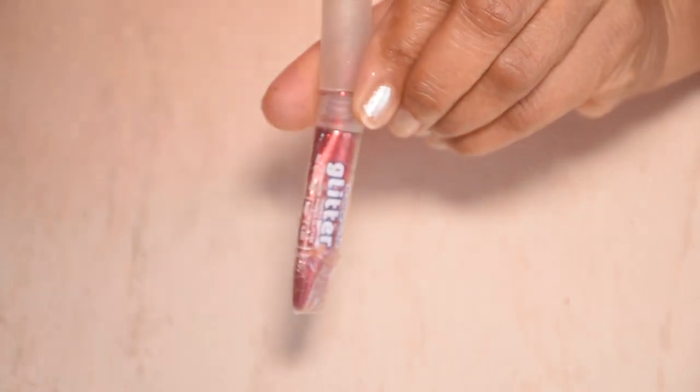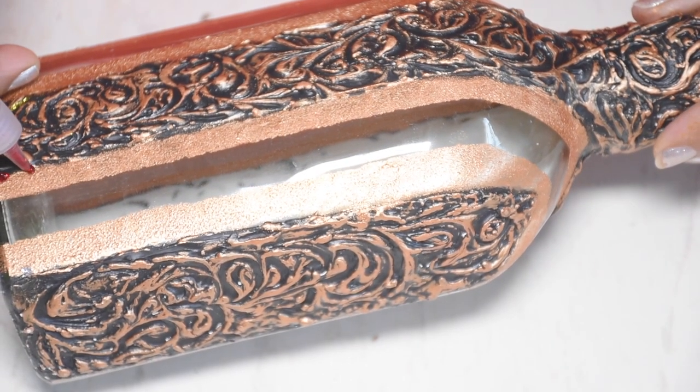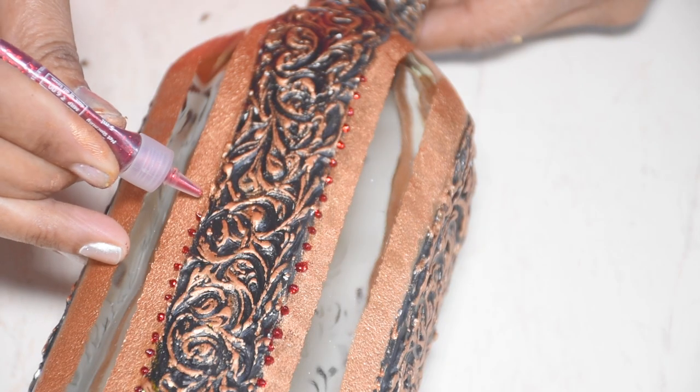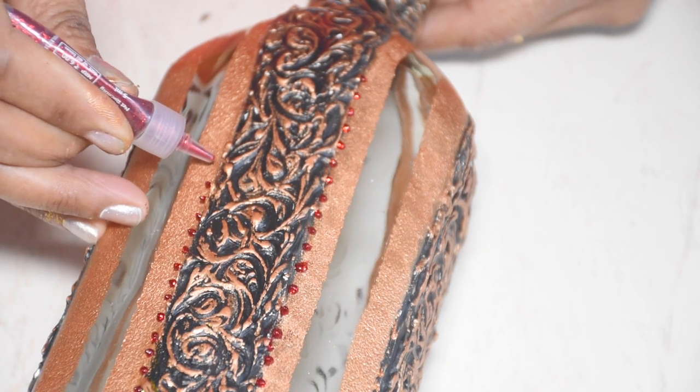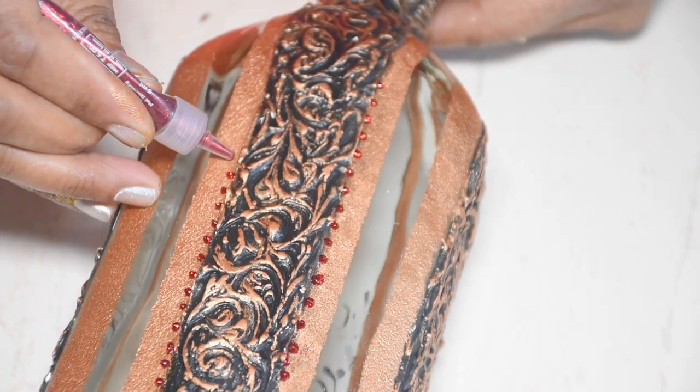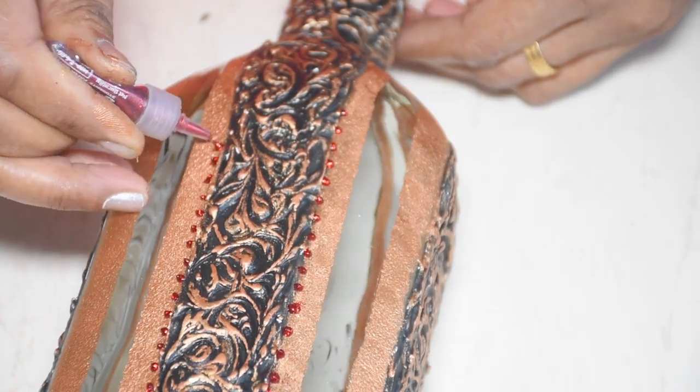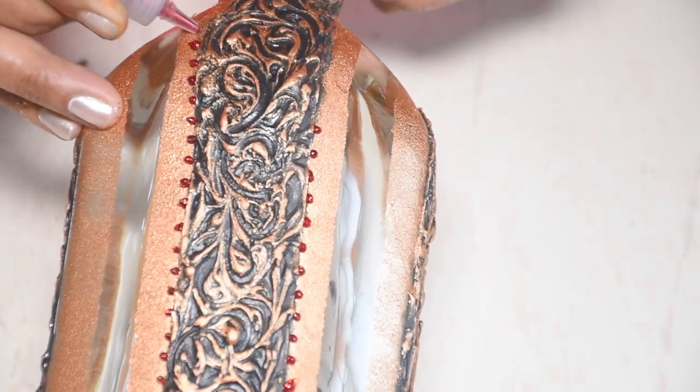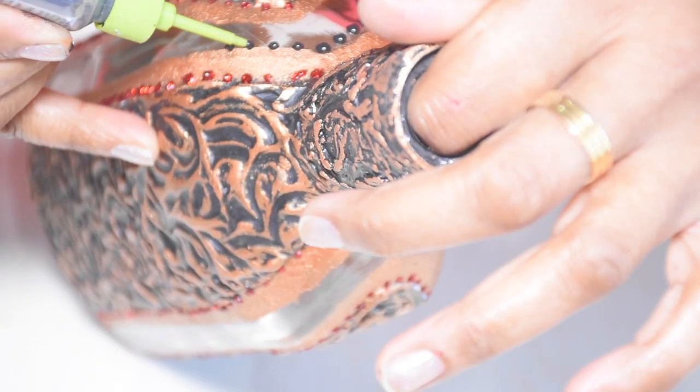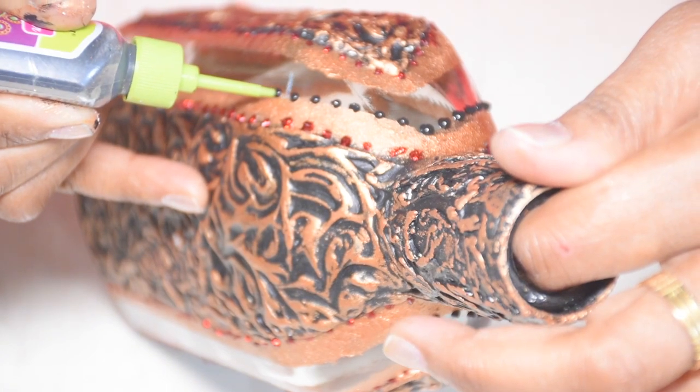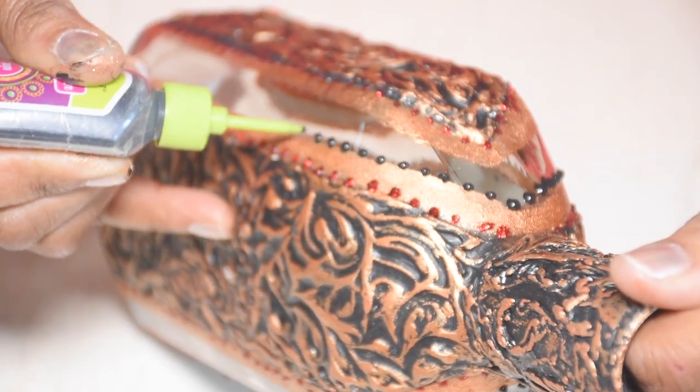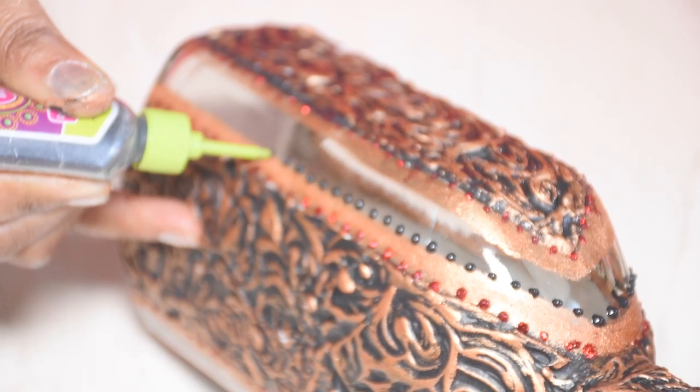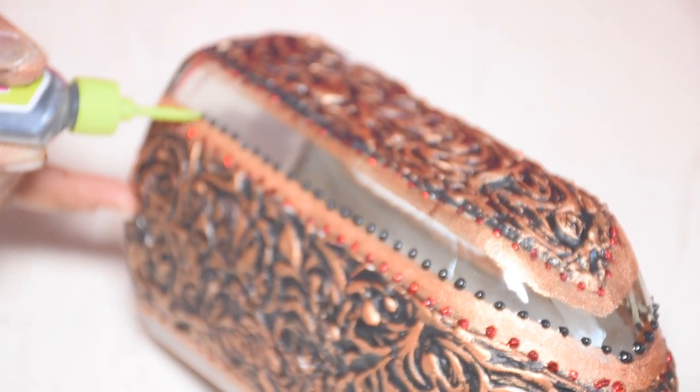Here we have red glitter color in a tube. We make dots on the texture. Now we use a black 3D cone. Let the color dry.